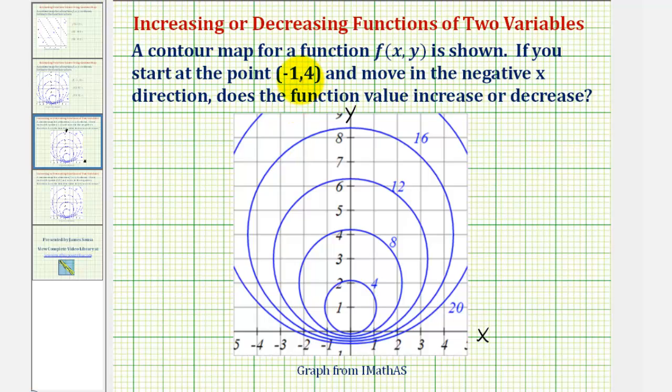We'll first locate the point negative one four, which should be here. Notice how the function value is eight at this location. But now from here, we want to move in the negative x direction.